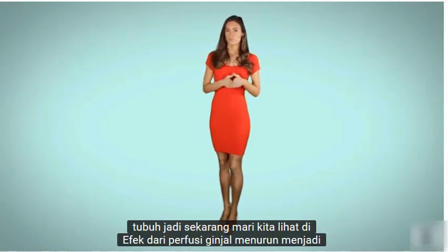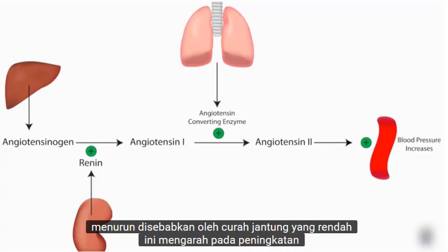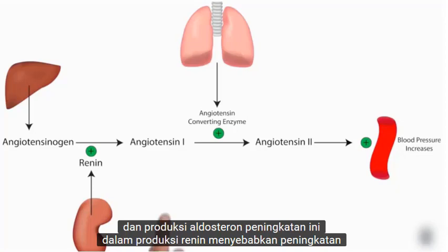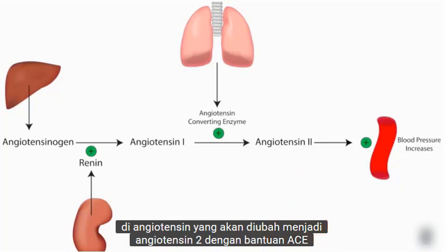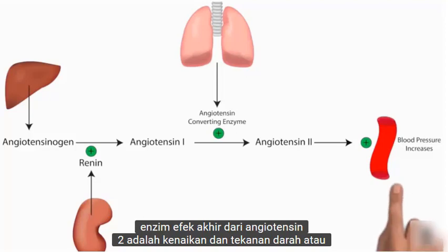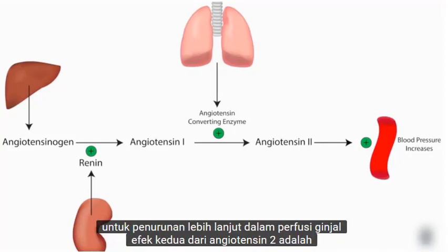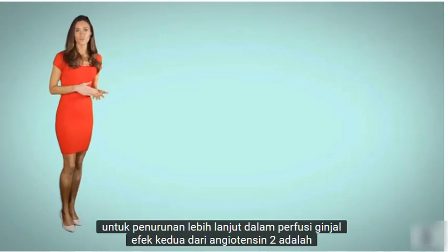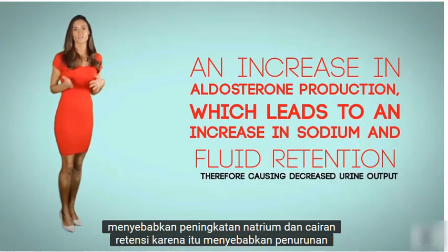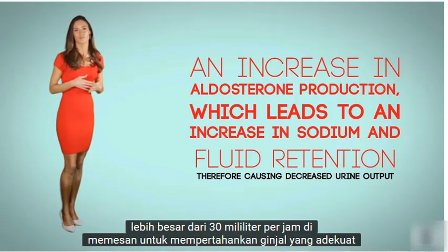Now let's look at the effects of decreased renal perfusion. When kidney perfusion is decreased due to low cardiac output, this leads to an increase in renin production, which leads to an increase in angiotensin 1, which converts to angiotensin 2 with help of the ACE enzyme. The final effect of angiotensin 2 is a raise in blood pressure or afterload, which can further decrease cardiac output, potentially leading to further decrease in renal perfusion. The second effect of angiotensin 2 is an increase in aldosterone production, leading to increased sodium and fluid retention and decreased urine output. Urine output must be greater than 30 milliliters per hour to maintain adequate renal perfusion.